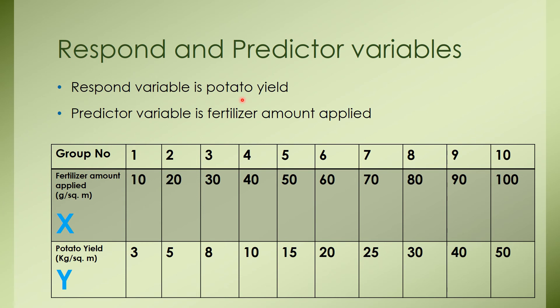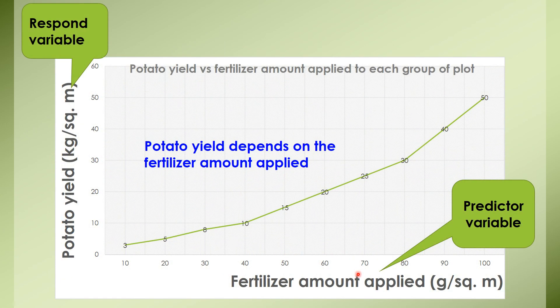In this experiment, potato yield is considered as respond variable, whereas the fertilizer amount applied is considered as predictive variable. So we are going to use the fertilizer amount data on x-axis and the potato yield data on the y-axis. So we plotted fertilizer amount applied on the x-axis, whereas the potato yield on the y-axis. What you can see over here, when we increase the fertilizer amount, the potato yield increases. So potato yield depends on the fertilizer amount. So the potato yield is the respond variable, whereas the fertilizer amount is the independent variable.